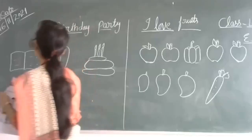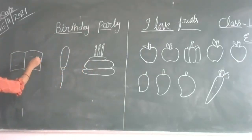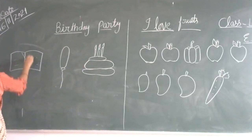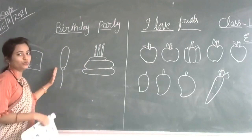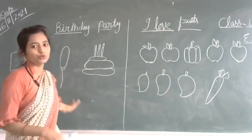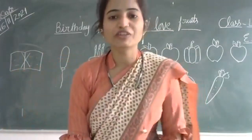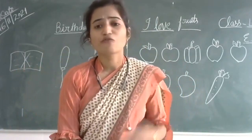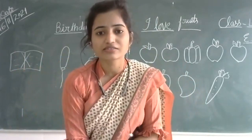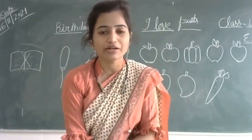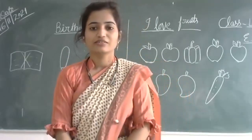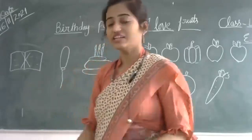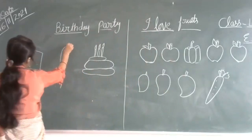So what will we do? Circle. Now next one — balloon. We need the balloon for the birthday party? Yes. Why do we need the balloon for the birthday party? For decoration. Yes, for decoration. We need the balloon. So circle the balloon.